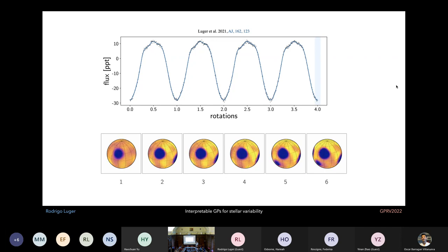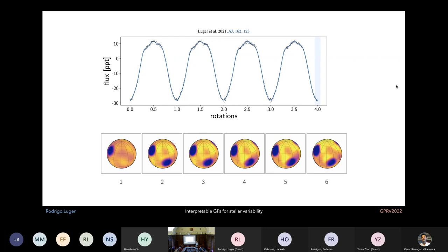But you can explore the null space of this problem, all the degeneracies, to construct these pathological scenarios. And you'll notice that it's not just dark spots on a uniform surface. There's bright stuff too. Those cancel out. And we don't expect stars to be uniformly bright surfaces with dark spots. There are plages, there are faculae, there's other stuff going on. And so these issues are probably not as pathological as they may seem.